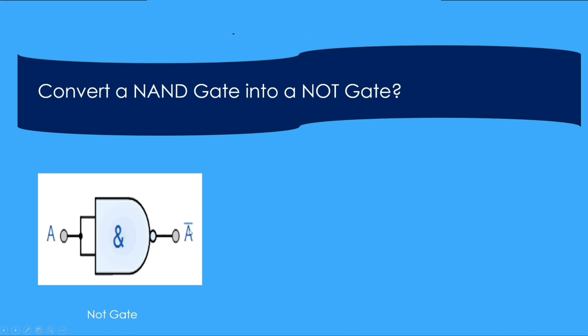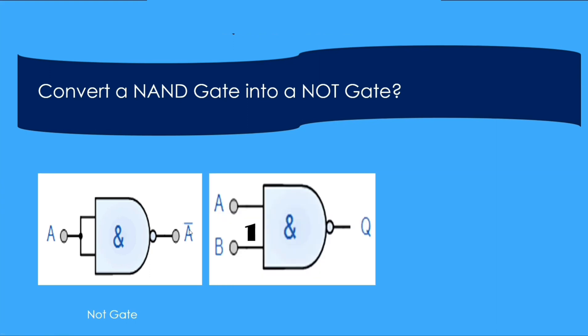The second method is to tie one of its inputs to one. When you give zero at the input, you will get one at the output. When you give one at the input, you will get zero at the output.